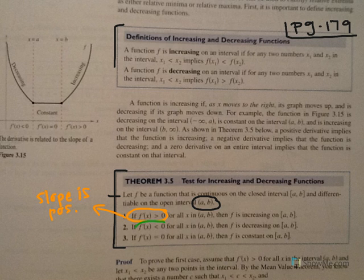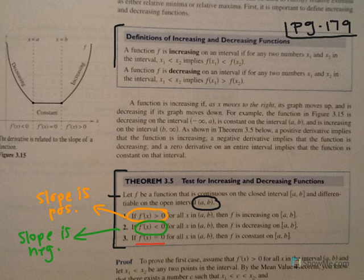The next case: if f′(x) < 0 — meaning all slopes are negative — for all x in that interval, then f is decreasing. If f′(x) = 0, that could indicate a maximum or minimum, or it could be constant. The key is that the derivative equals zero not just at one point but for all x in that interval. So: increasing means all slopes positive, decreasing means all slopes negative, constant means slope is zero.